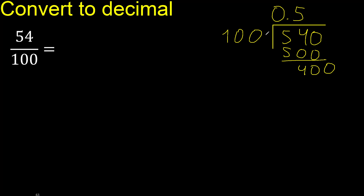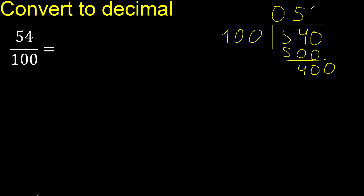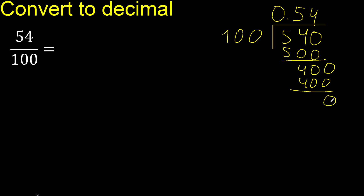400. 100 — multiply by which number is nearest to 400 but not greater. Multiply by 5 is 500 — is greater. Multiply by 4 is 400 — is not greater. Subtract 0, remainder is 0, therefore finish.